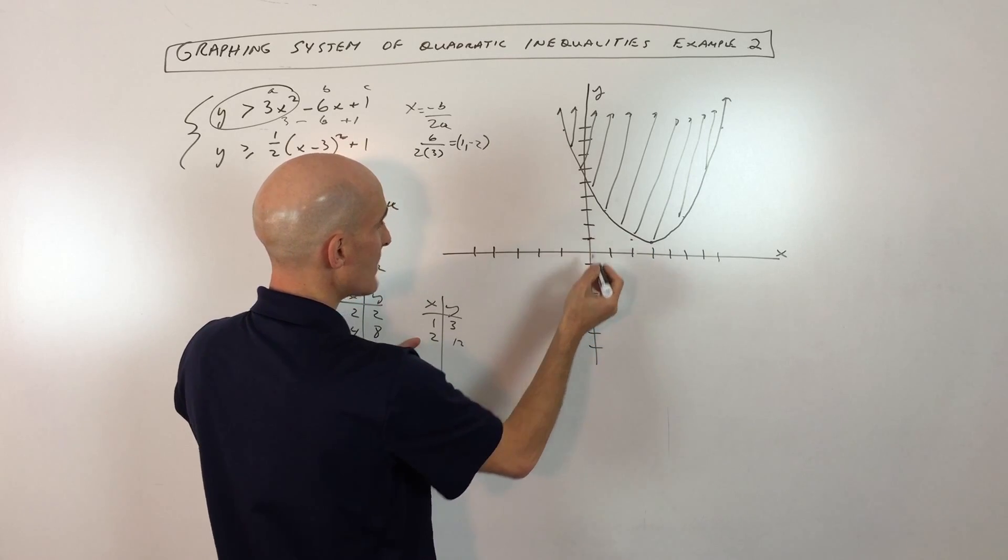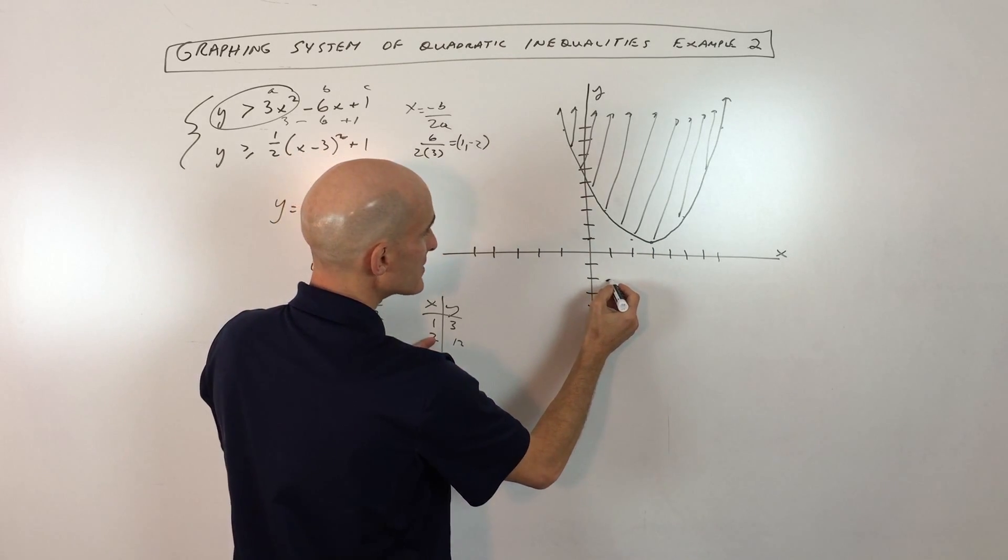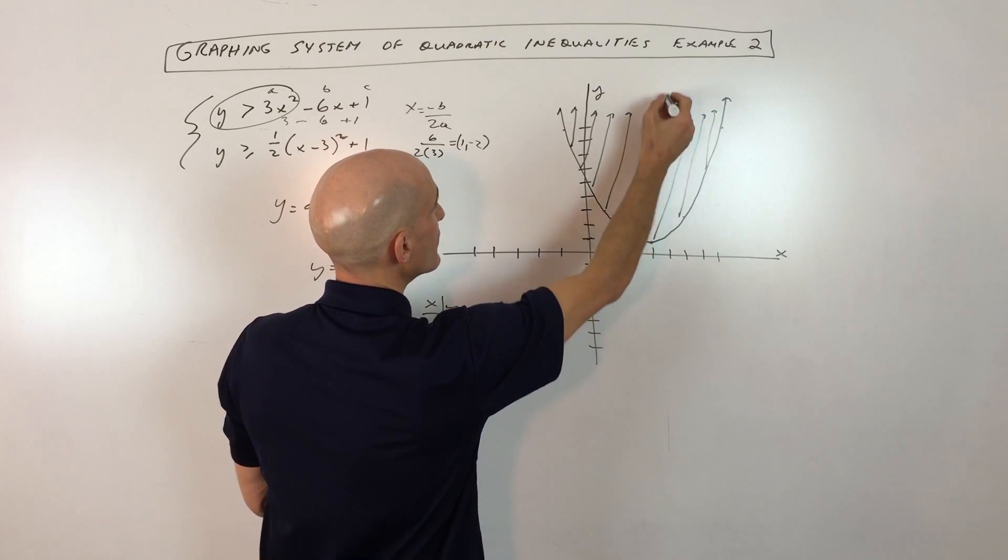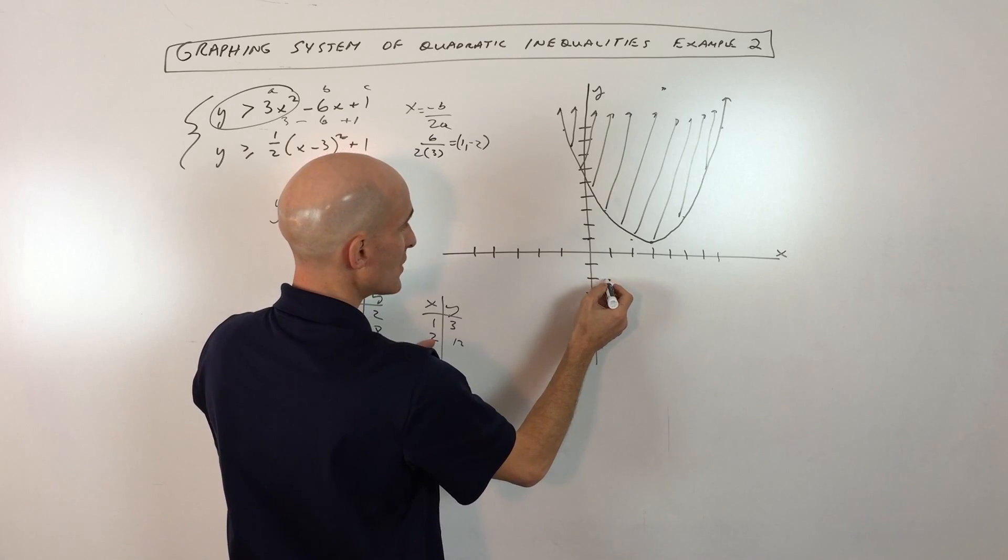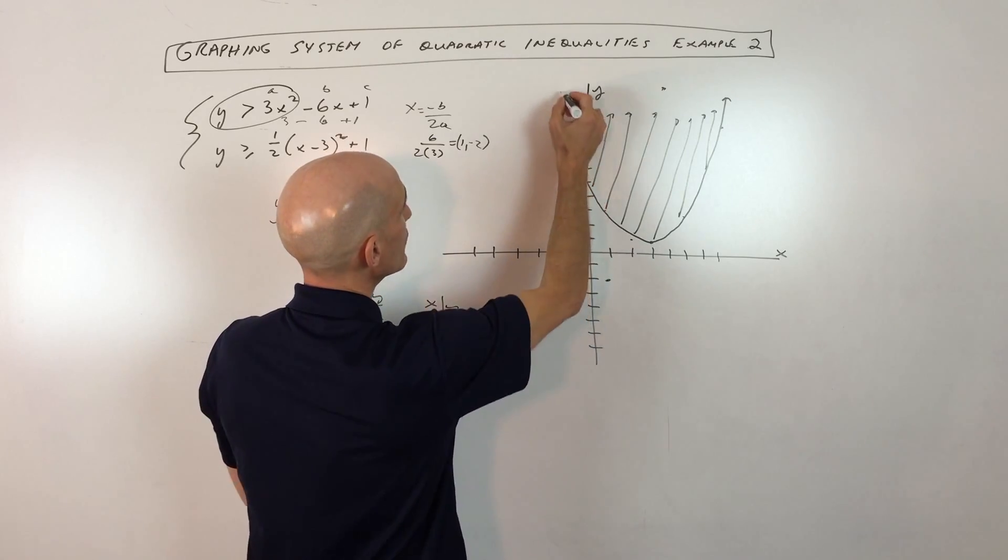And then 2, 12. So that's going to be 1, 2, way up here. And then over here, let's see, 2, that's going to be 1, 2, way up here.